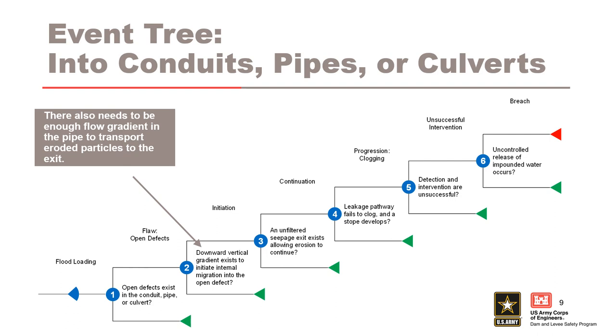Node 5 is intervention: detection and intervention are unsuccessful. Node 6 is the breach node, where uncontrolled release of the impounded water occurs.